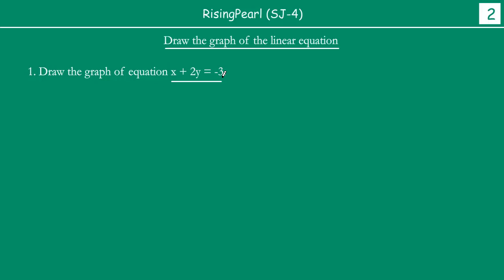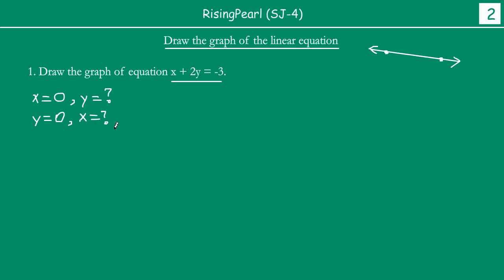What do we do? First of all, when you have a straight line, you need two points — every straight line passes through at least two points. The best shortcut method is: put x equals 0 and find the value of y, then put y equals 0 and find the value of x. This quickly gives you two points.